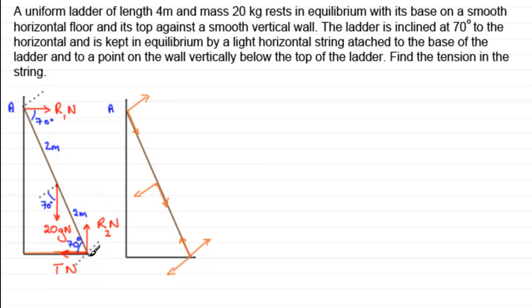Coming around to the tension's angle: this section is 90 degrees total, so with 70 degrees accounted for, the remaining part is 20 degrees. Then this interior angle is also 90 degrees, making that angle 70 degrees as well. So we use 70 degrees throughout. I always work with the given angle — 70 degrees — rather than switching to 20 degrees, as I find that much easier.